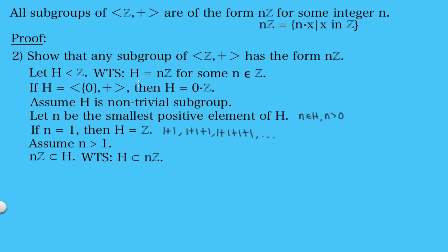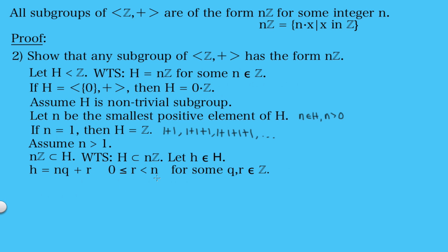Now the next thing we want to show in order to prove that H equals the integer multiples of n is that H is also a subset of the integer multiples of n. Because if we can show each is a subset of the other, then these two must be equal. To show this, we're going to let h be an arbitrary element in our subgroup H. We can write h as n times q plus r by the division algorithm, where r is greater than or equal to 0 and less than n, for some integers q and r. You can click on the link to learn more about the division algorithm. Now we know h is in our set H, and we also know that n times q is in our set H as well because nℤ is a subset of H. So by the closure property, h minus n times q must also be in H.